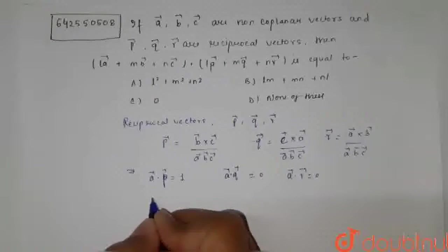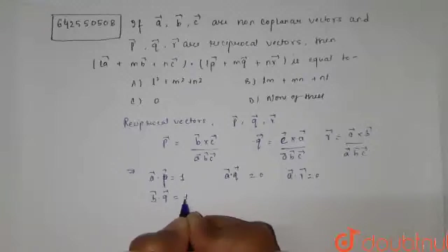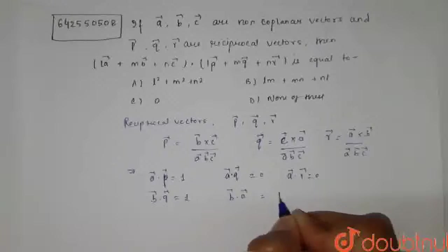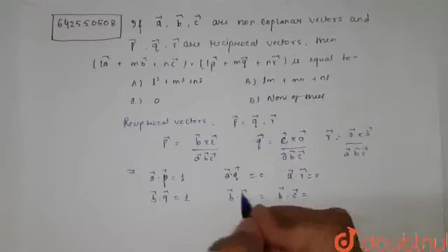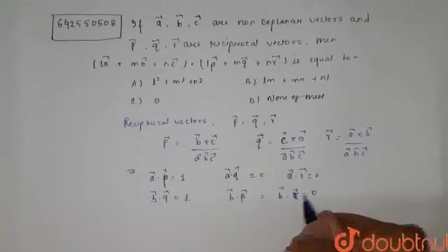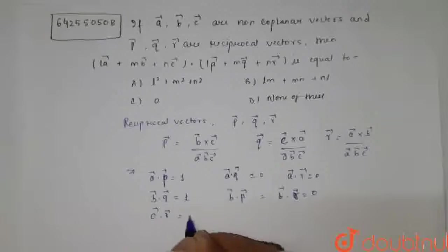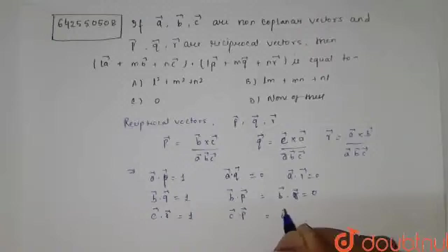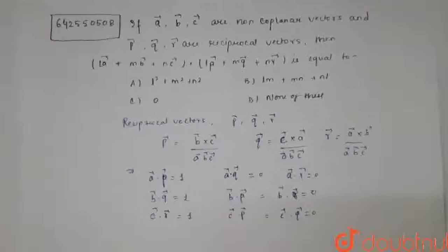Similarly, we can say that the dot product of B with Q is one whereas dot product of B vector with P vector and R vector is zero. Similarly, C vector to R vector is one whereas C vector to P vector, dot product of these two terms is equals to zero.